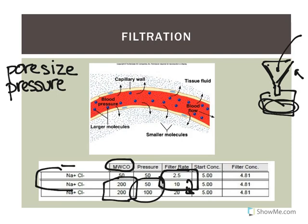Two things affect filtration: pore size and pressure. A real-life example is the glomeruli of the kidneys, where the hydrostatic pressure is much greater than in the rest of the body. This is by design — the kidney's job is to filter your blood and remove waste products, so it requires a very high filtration rate. This is your last topic for passive transport mechanisms; next up is active transport.